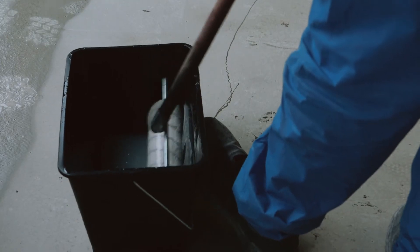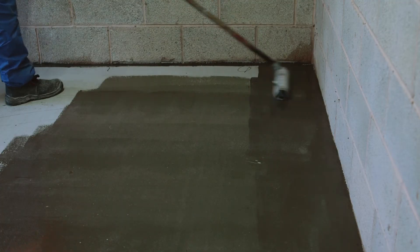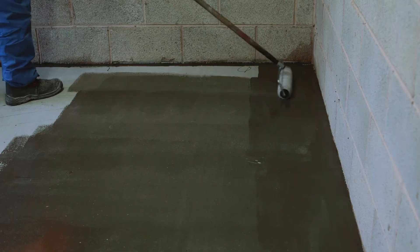Pour the rest of the coating out of the can immediately and start to spread using a roller. Spread the mixture out on the floor evenly and thinly ensuring you get an even coverage.